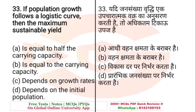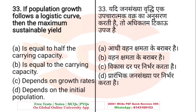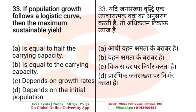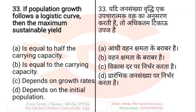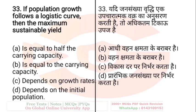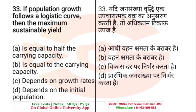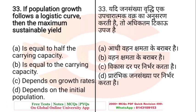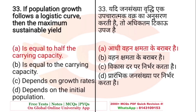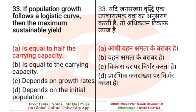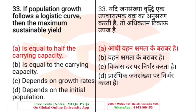Question: If population growth follows a logistic curve, then the maximum sustainable yield — A. Is equal to half the carrying capacity, B. Is equal to the carrying capacity, C. Depends on growth rates, D. Depends on the initial population. The right answer is B — equal to the carrying capacity.